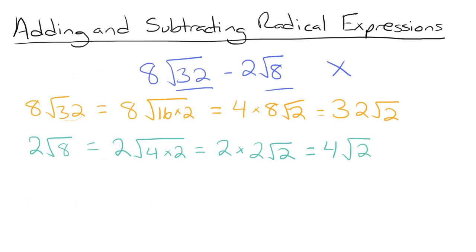And now we can subtract. So we'll take our 8 root 32, which became 32 root 2, minus our 2 root 8, which became 4 root 2. And we subtract our coefficients. 32 minus 4 is 28. And our root stays the same. So we have 28 root 2.